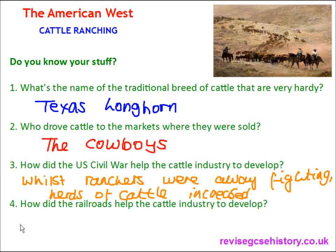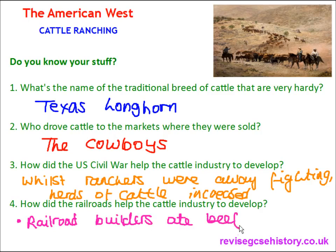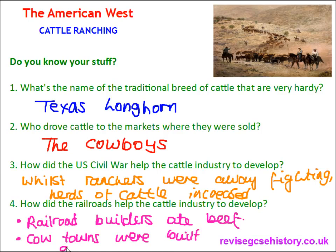Question four: How did the railroads help the cattle industry to develop? Railroad builders ate beef, which created demand for it. Another way is that cow towns were built along the railways. So there are the answers to the four quick questions for this video today.